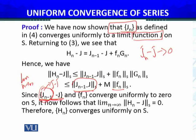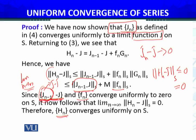So this sequence of functions converges to zero. Therefore, as n approaches infinity, the norm of (Hn minus j) over S is less than or equals to zero. Since a norm cannot be less than zero, it equals zero. Therefore, the sequence of partial sums of the series — summation n equals k to infinity of fn·gn — which we had to show is uniformly convergent — the sequence of partial sums uniformly converges, and by definition of convergence of series of functions, this series is uniformly convergent.